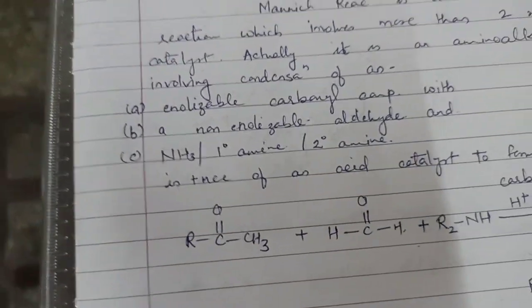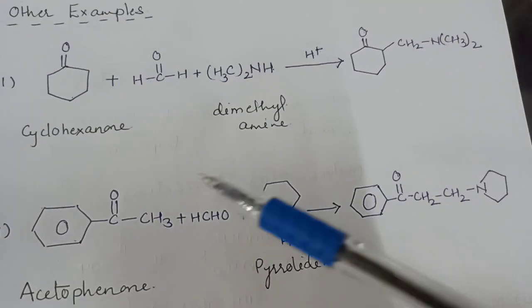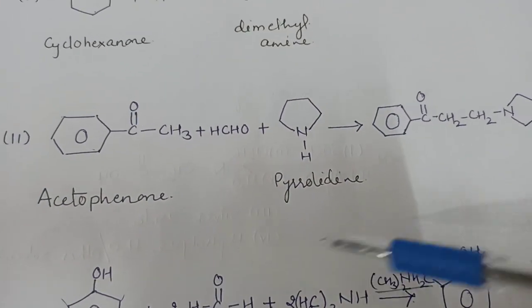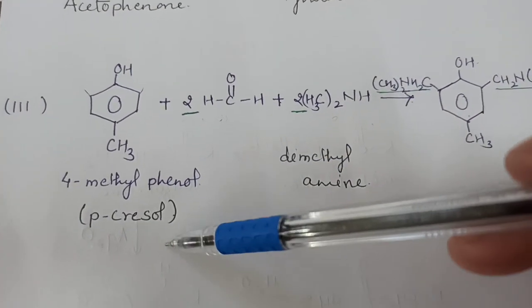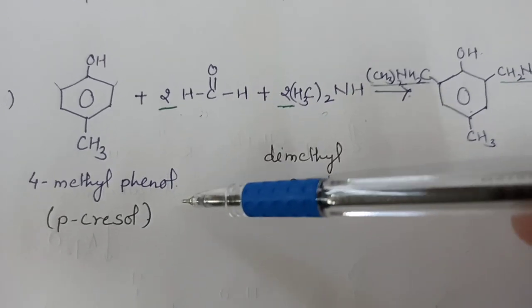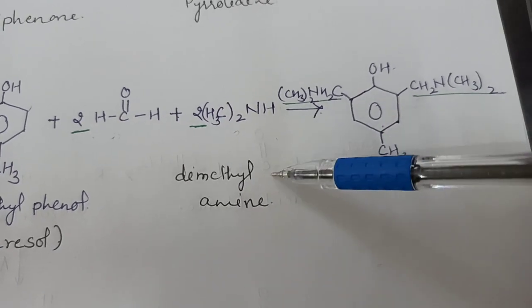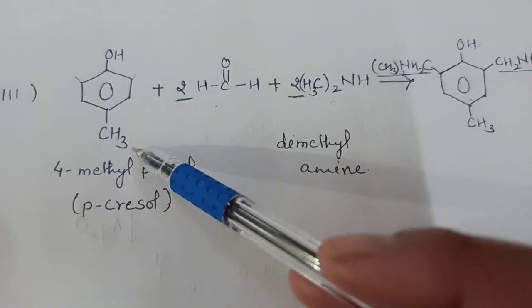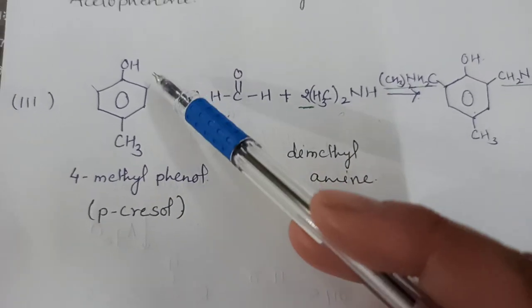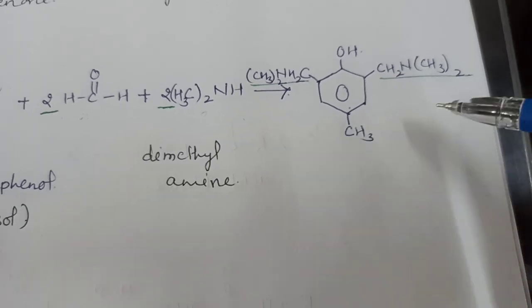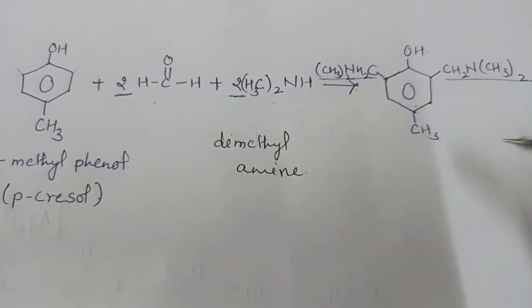Now some other examples of the Mannich reaction. In the first example, cyclohexenone reacts with dimethylamine. In the second, acetophenone reacts with pyrrolidine. In the third example, instead of phenol, there is 4-methylphenol or para-cresol. If we take excess of formaldehyde and dimethylamine, since OH is the ortho-para directing group and the para position is blocked by the CH3 group, substitution can occur on both ortho positions of the phenol.